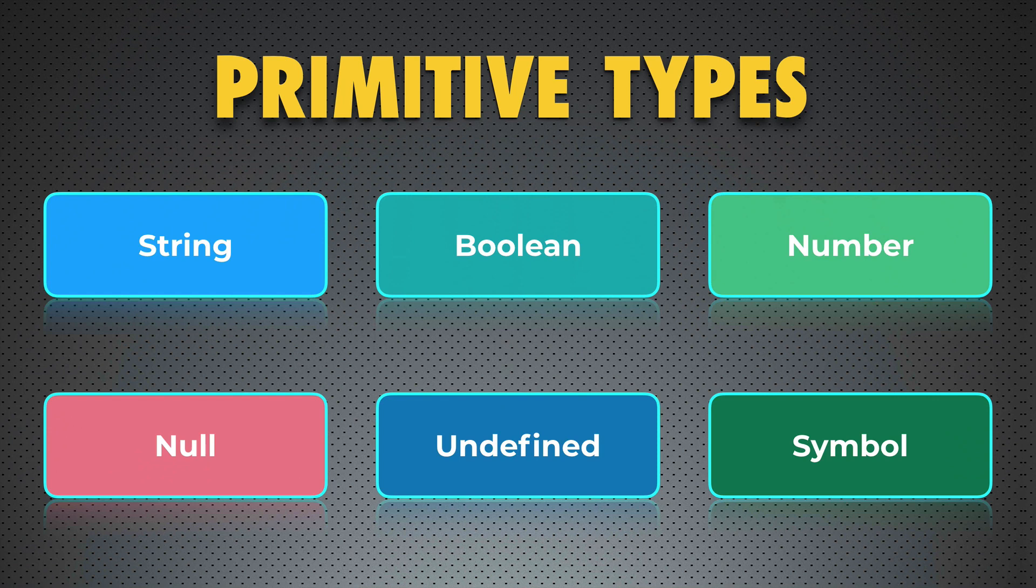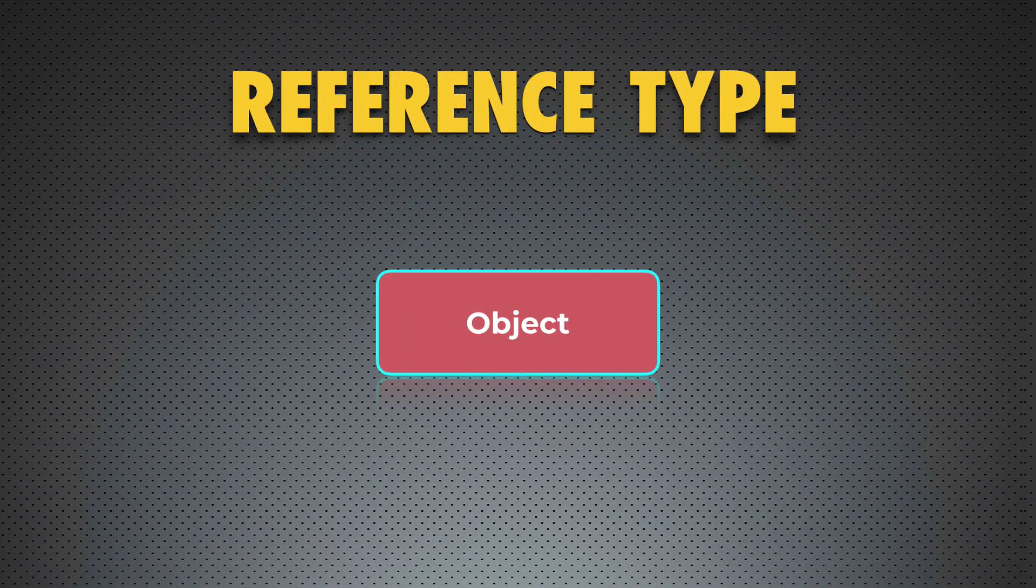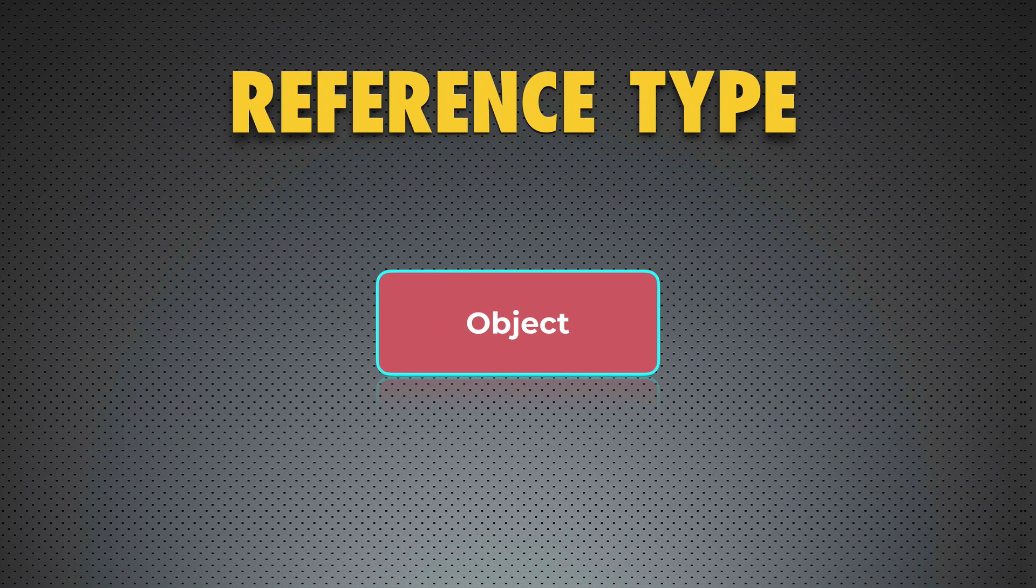By the way, JavaScript is one of the implementations of ECMAScript standard. But what about second group, reference type? Which value type in JavaScript belongs to this group? And I am sure you know answer to this question. It is object.